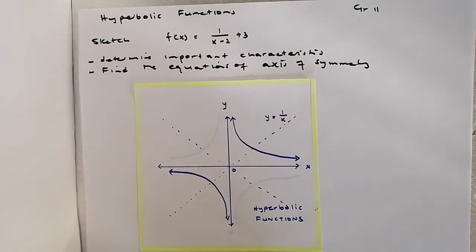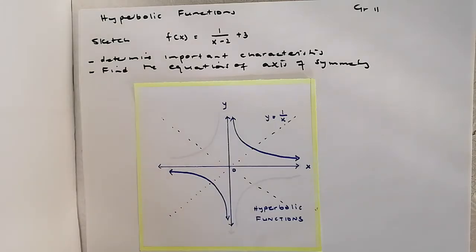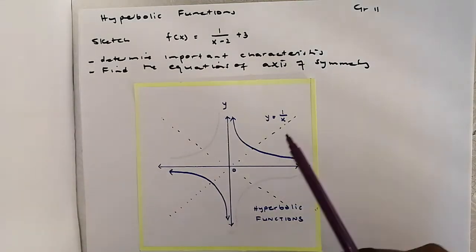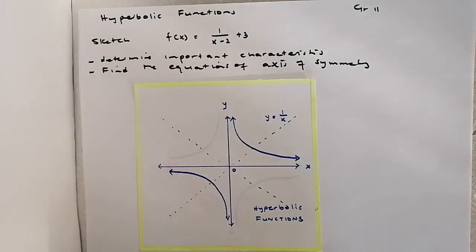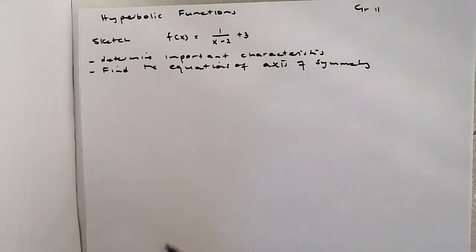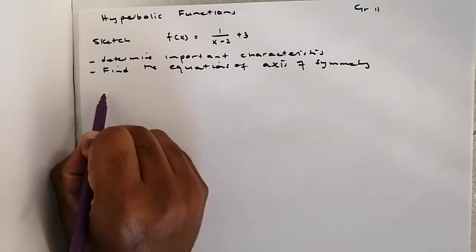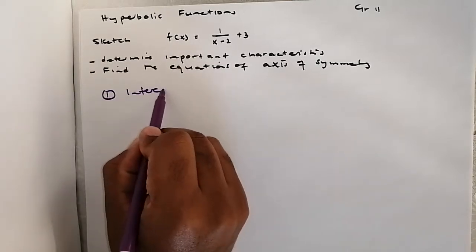Hello everyone, welcome to Academic Coordinates. In this video we're doing an example of a hyperbolic function — we're going to sketch the function and determine its important characteristics: the domain, the range, where the function is increasing, where it's decreasing, and we're also going to find the equation of the axis of symmetry. Let's dive right into it — first of all we're going to find the intercepts.